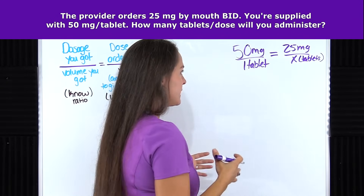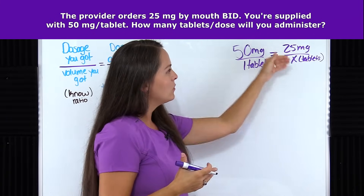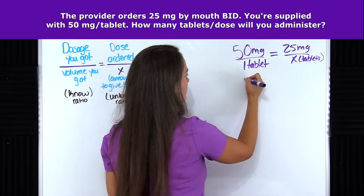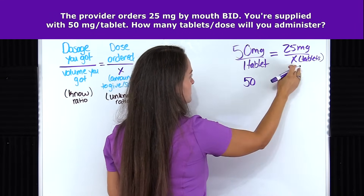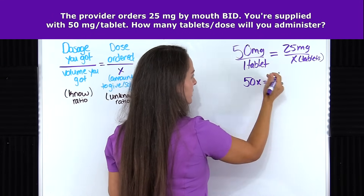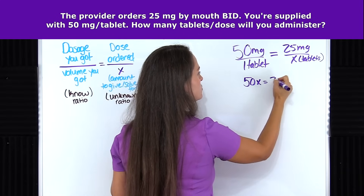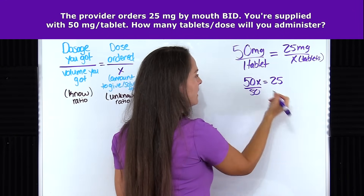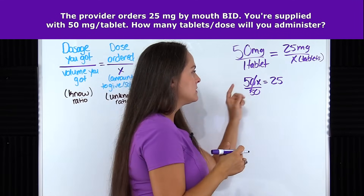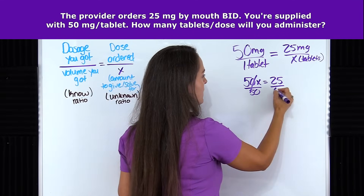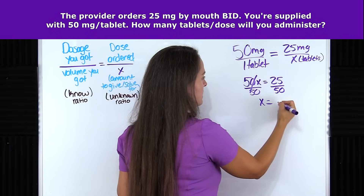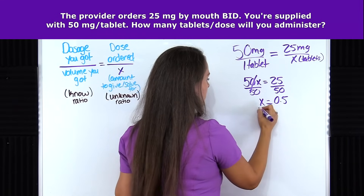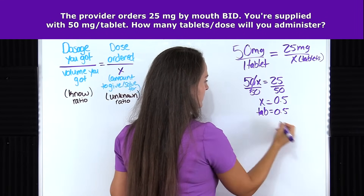Before I cross multiply, let's do a quick check. Are these in the same order? They are. Do the units match? They do. So now I can cross multiply. 50 times x is 50x, equals 25 times 1, which is 25. Now I need to get x all by itself, so I divide both sides by 50. That cancels out, giving me x equals 0.5 tablets. So tabs equal 0.5 — that's our answer.